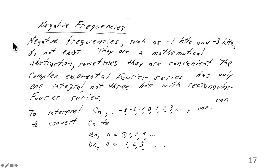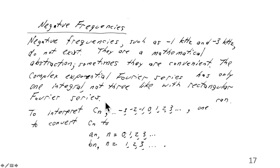Negative frequencies: these do not exist. Negative frequencies such as minus 1 kilohertz and minus 3 kilohertz do not exist — they are a mathematical abstraction, sometimes convenient. The complex exponential Fourier series has only one integral, not 3 like the rectangular Fourier series. To interpret the complex exponential Fourier series coefficients, which are defined over all integers, one can convert the Cn back to An and Bn if desired.